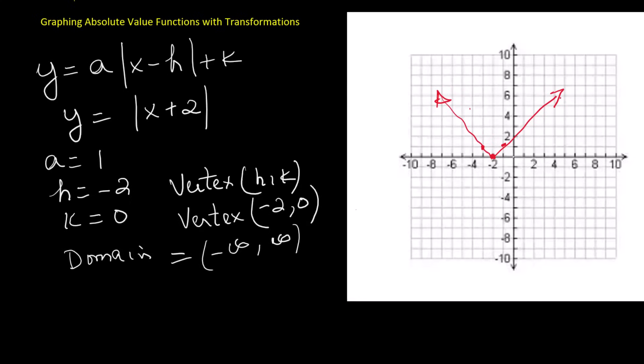The domain is all real numbers, written in interval form as open parenthesis negative infinity comma positive infinity close parenthesis. The range is all values greater than or equal to 0, written in interval form as closed bracket 0 comma infinity close parenthesis.